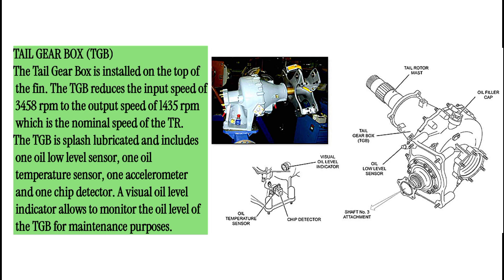Tail gearbox (TGB). The tail gearbox is installed on the top of the fin. The TGB reduces the input speed of 3,458 RPM to the output speed of 1,435 RPM, which is the nominal speed of the tail rotor. The TGB is splash lubricated and includes one oil low-level sensor, one oil temperature sensor, one accelerometer, and one chip detector. A visual oil level indicator allows monitoring of the oil level of the TGB for maintenance purposes.